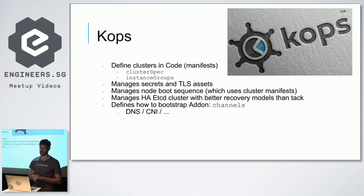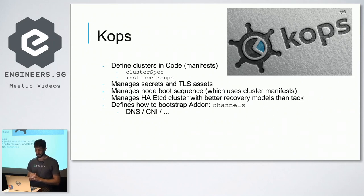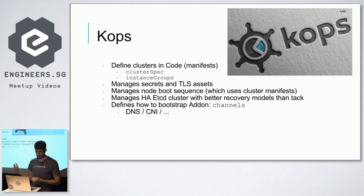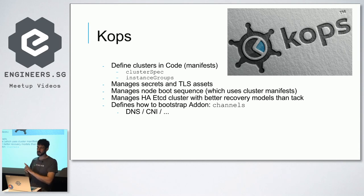KOPS is a project now endorsed by Kubernetes. It allows you to define clusters in code — you give it a cluster spec manifest and a couple of instance group definitions, and it creates the cloud components needed. It manages secrets, manages the node boot sequence, and manages etcd in high availability mode. With KOPS, it creates an auto-scaling group of a single master per master — so if the machine goes away, it gets automatically replaced and the etcd data is reattached to that node.